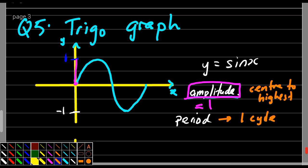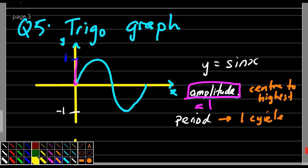So, in this case, one cycle is how many degrees? 360. So, I use another color. To find period, we say that this is 360. So, the period is equal to 360 degrees.